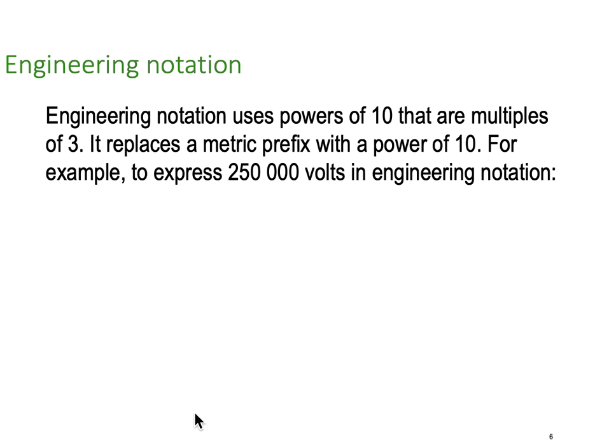Engineering notation, how is that different from scientific? Engineering notation uses powers of 10 that are multiples of 3. It replaces a metric prefix with a power of 10. For example, remember our 250,000 volts in engineering notation would be 250 kV, or 250 times 10 to the 3, rather than 25 times 10 to the 4.